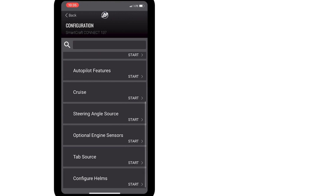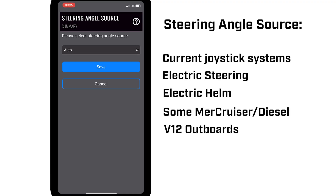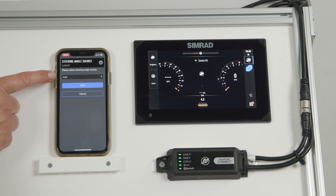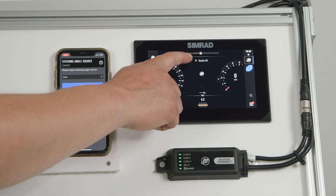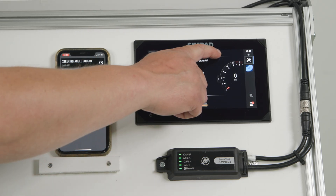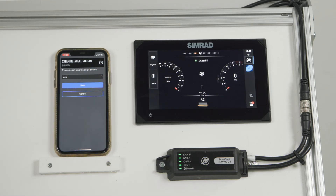The next category is Steering Angle Source. Any current joystick system, e-steer system, electric helm vessel, certain MerCruiser diesel applications, and V12 outboards are equipped with a Steering Angle Sensor. We have this set to Auto, which means we can see the readout for the Steering Angle Sensor at the top of the MFD. This is especially important with the steerable gear case of the V12 Verado.